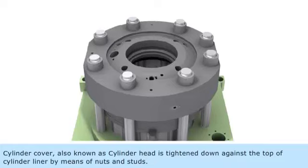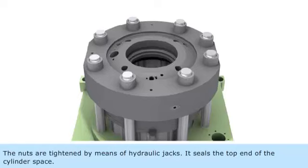Cylinder cover, also known as cylinder head, is tightened down against the top of cylinder liner by means of nuts and studs. The nuts are tightened by means of hydraulic jacks. It seals the top end of the cylinder space.